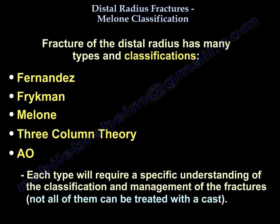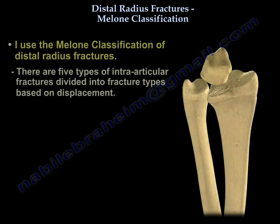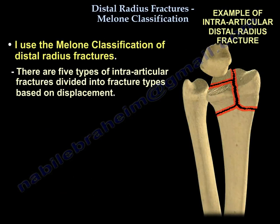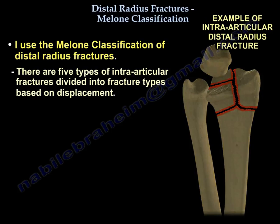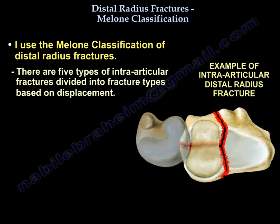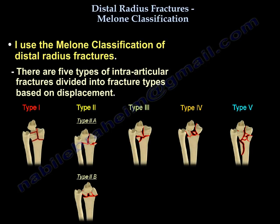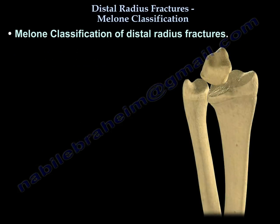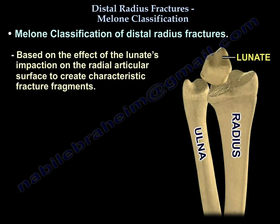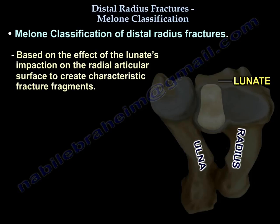Not all fractures can be treated with a cast. I use the Malone classification for the intraarticular distal radius fracture. This is an example of an intraarticular distal radius fracture. Malone has about five types of intraarticular distal radius fracture, based on the displacement of the fragments and based on a consistent mechanism, which is the lunate impaction injury.